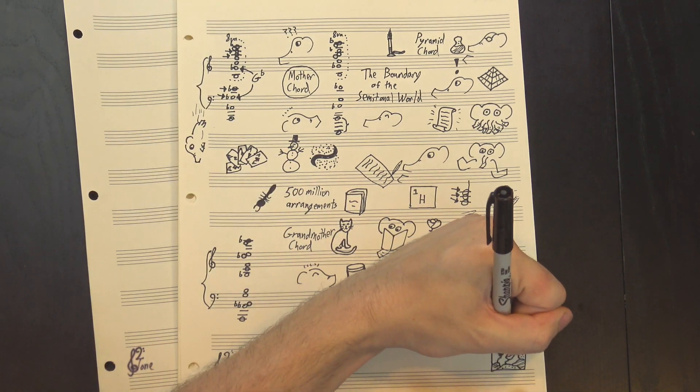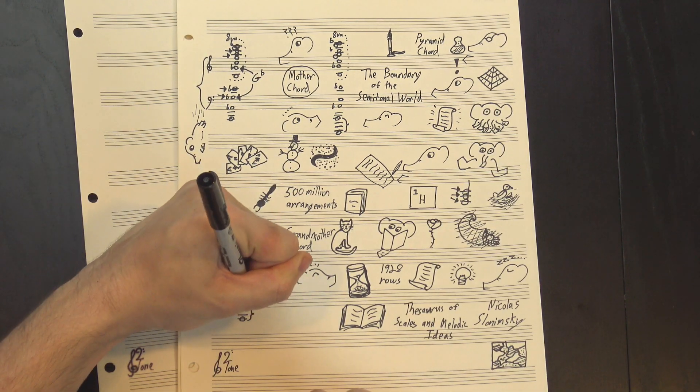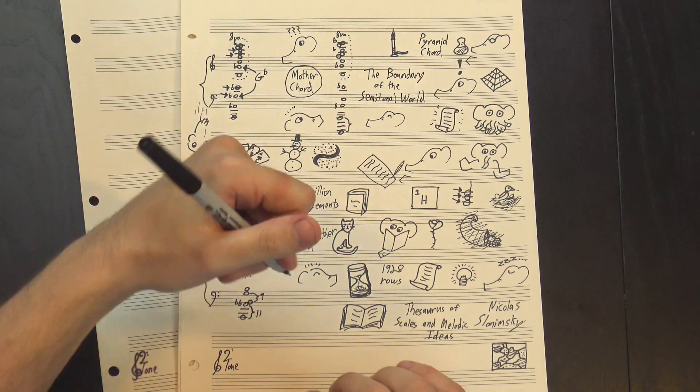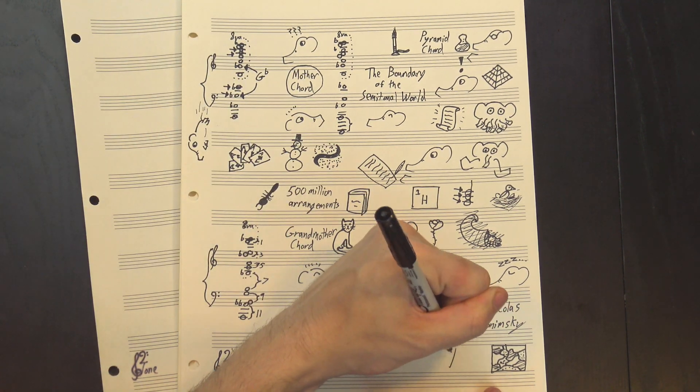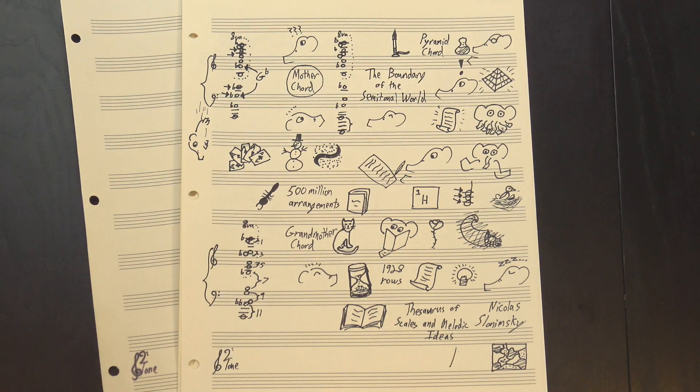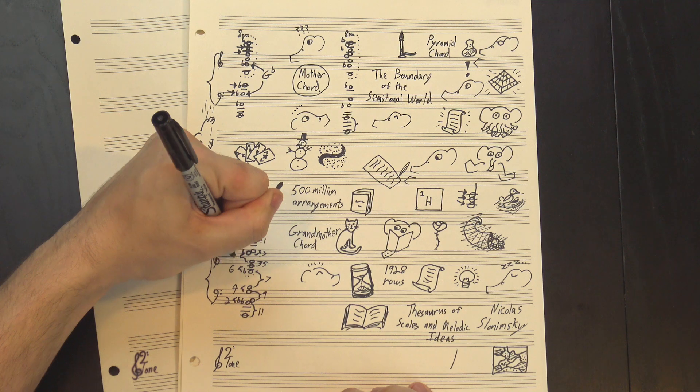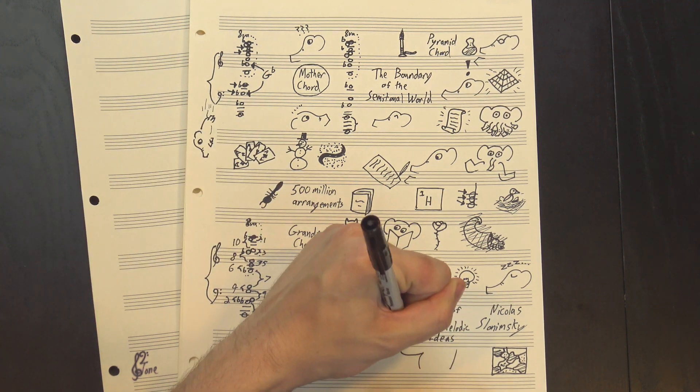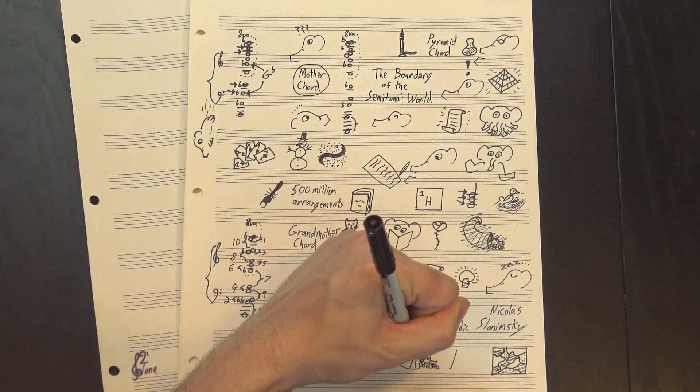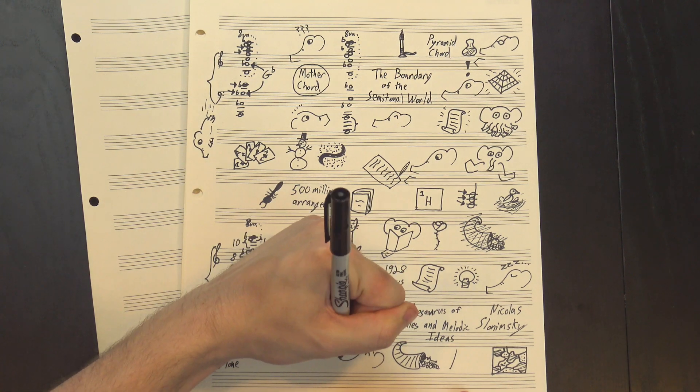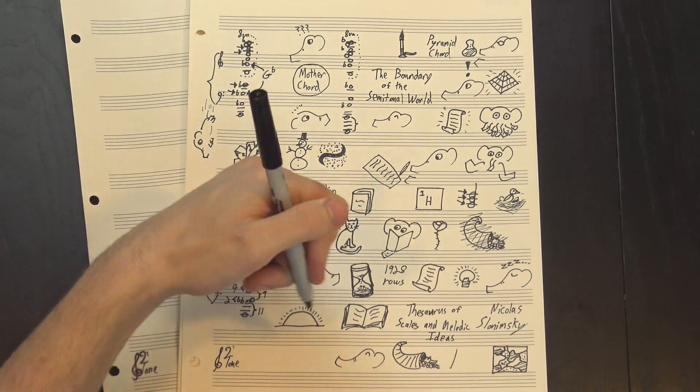Now, what makes this interesting is the pattern of intervals. If we take these in pairs, we have eleven half-steps here, nine here, seven here, and so on. It's all the odd numbers arranged from largest to smallest. If we look at the gaps between the pairs, we see two half-steps, four, six, and you can probably figure out what's happening here. Slonimsky's managed to not only fit in all the notes and all the intervals, but do it in a fairly straightforward pattern, too. It's pretty beautiful, if you ask me.